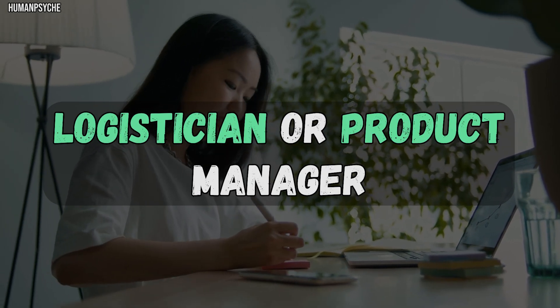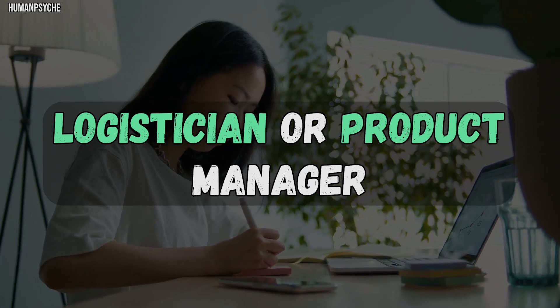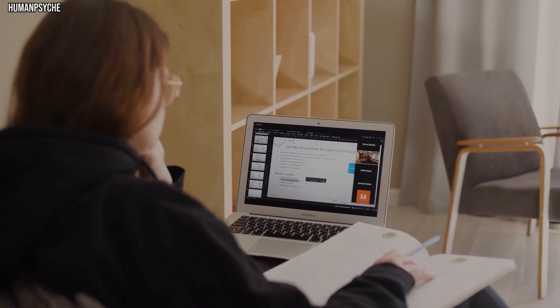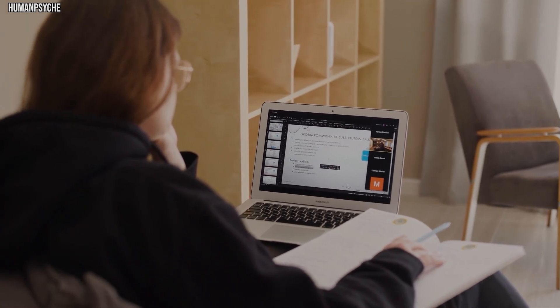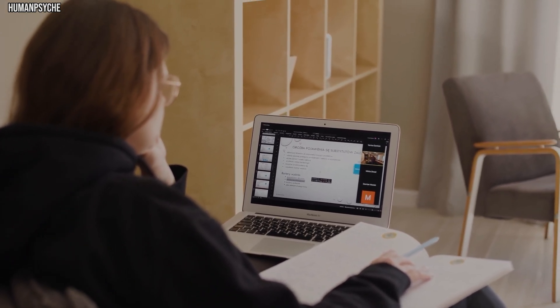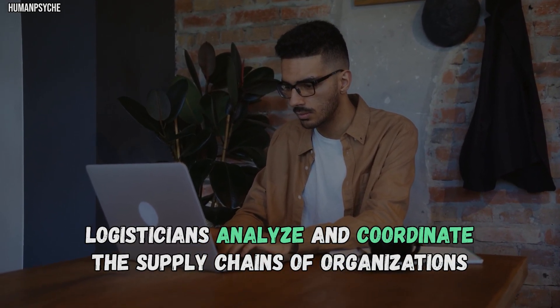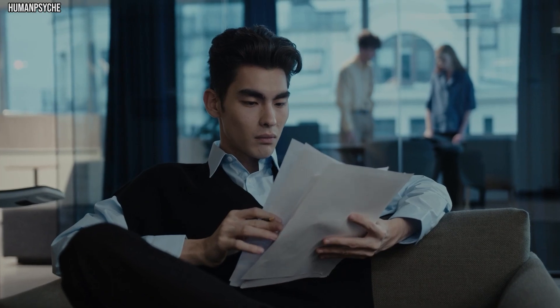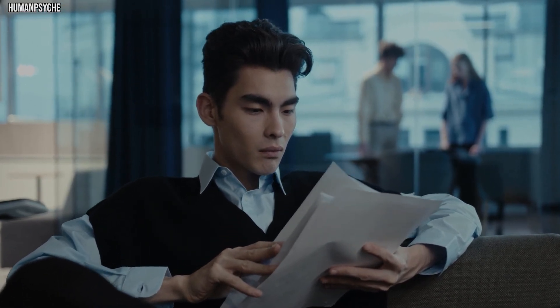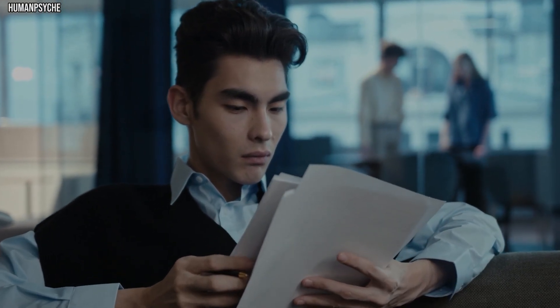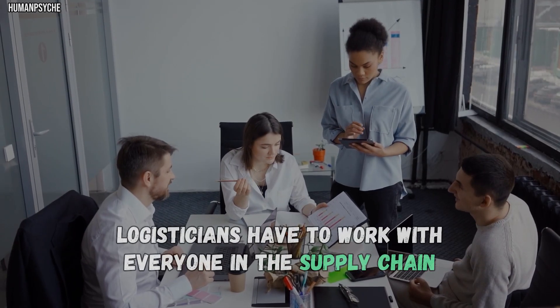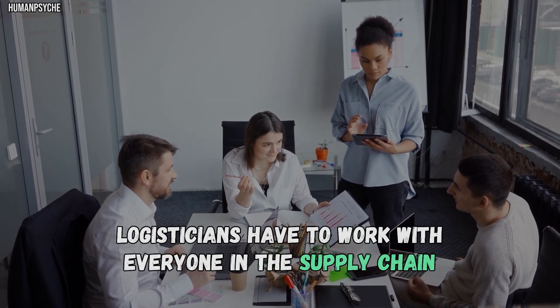Number 6: Logistician or Product Manager. Because INTJs are very logical, it only makes sense that they would find success as a logistician. Logisticians analyze and coordinate the supply chains of organizations. This job is for people who want to manage the entire cycle of a product from start to finish. Logisticians have to work with everyone in the supply chain. Because they have to do business with suppliers and customers, logisticians need strong communication skills.